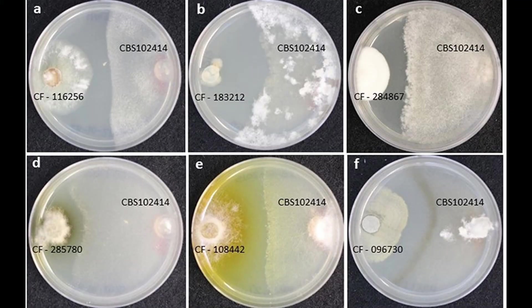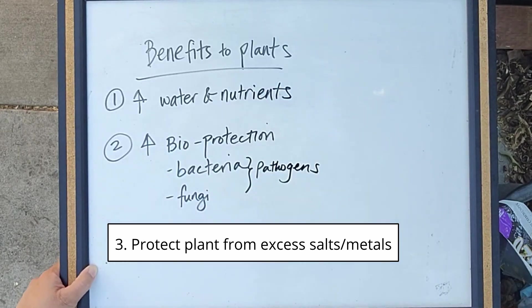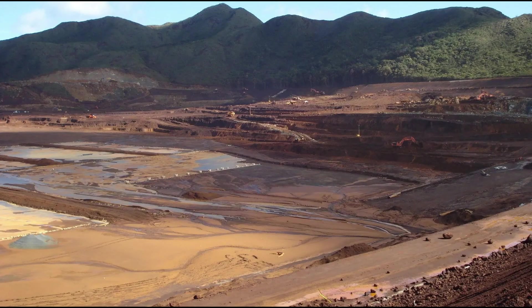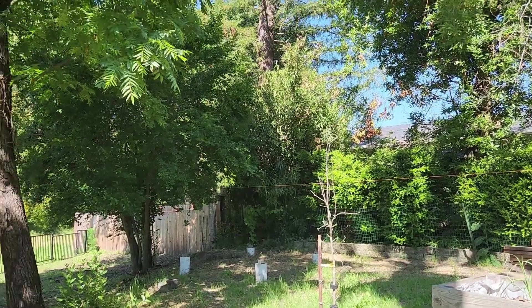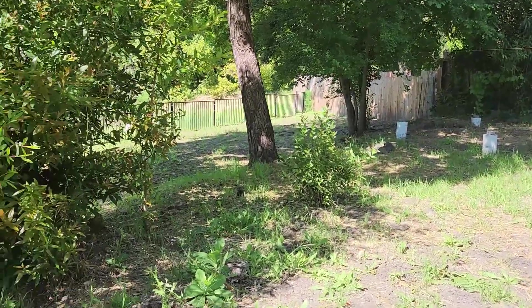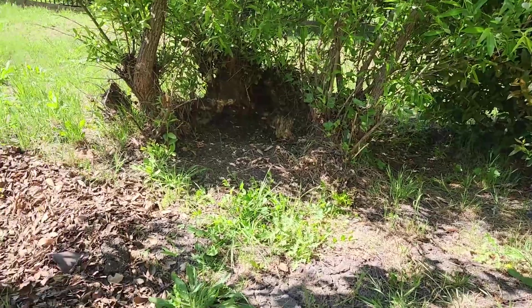For example, mycorrhizal fungi can outcompete other fungi that may act as pathogens, and they can secrete antibiotics that protect the tree from bacteria. So these benefits are real. They occur in nature and in experimental studies, but a lot of that research is limited to agriculture, reforestation, reclaiming damaged lands, and laboratory settings. The results are not necessarily applicable to landscape because conditions are different and there's a lot of diversity in both environments and plant species. So you have to take these claims with a grain of salt.